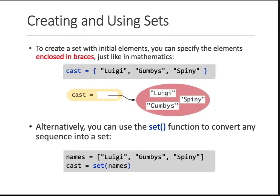So in Python specifically, how do you create sets? To create sets, you can specify the elements enclosed in curly braces. So what's happening in this line, you're creating a set called cast and what are the members of that set? It's three strings. One is Luigi, Gumbys and Spiny. And that's another thing. So if it's a set of strings, you cannot add comma one. So they have to be elements of the same type.